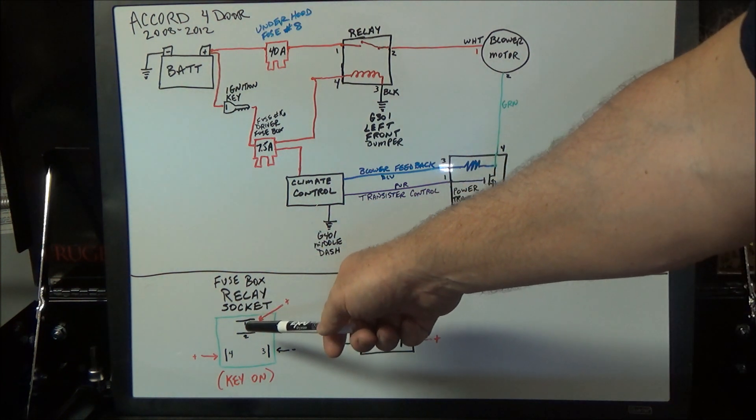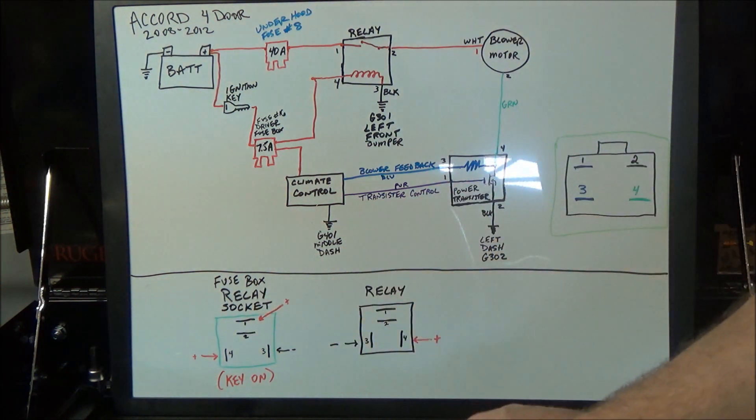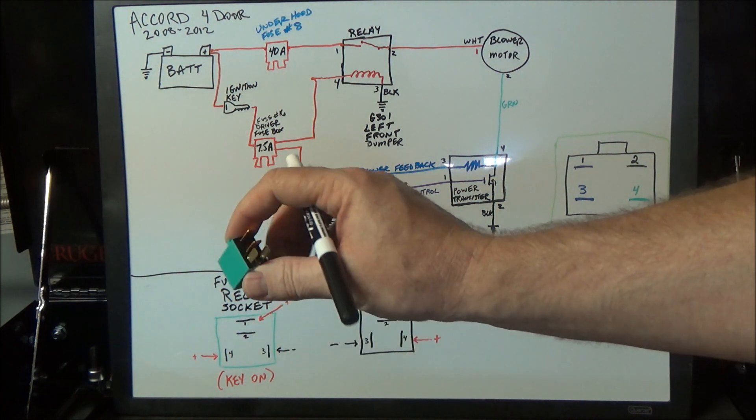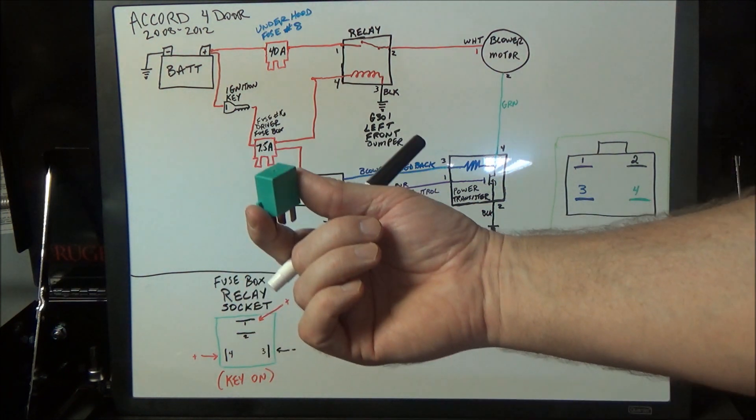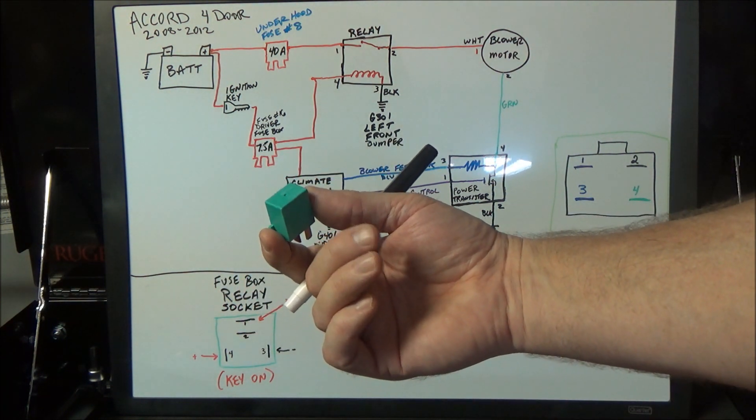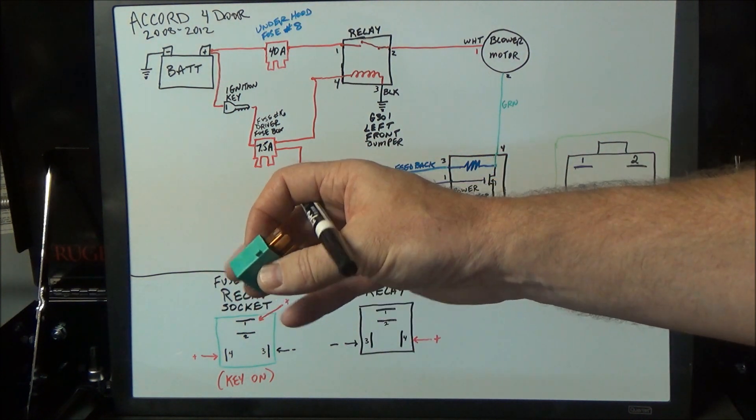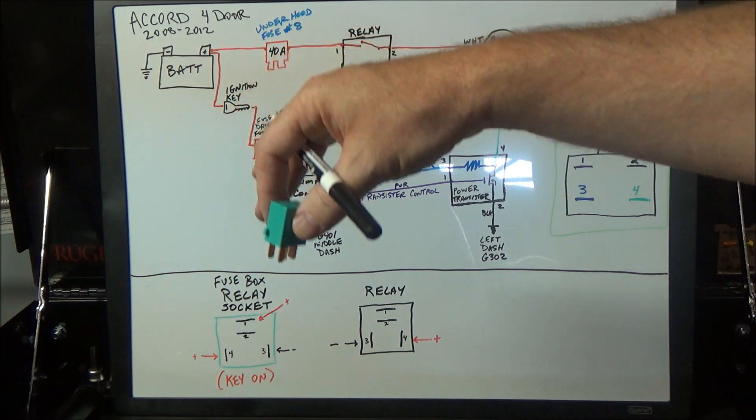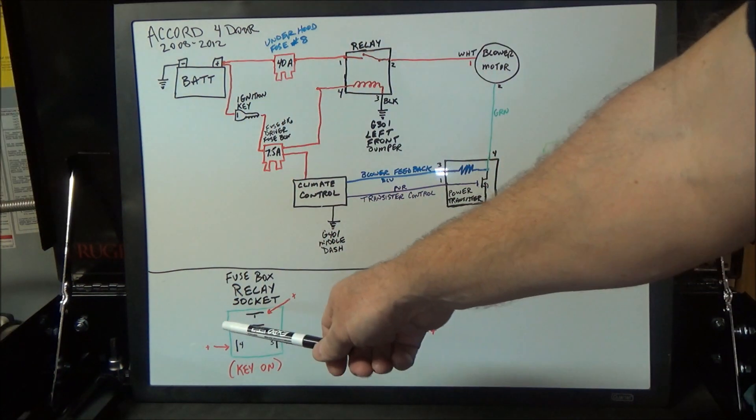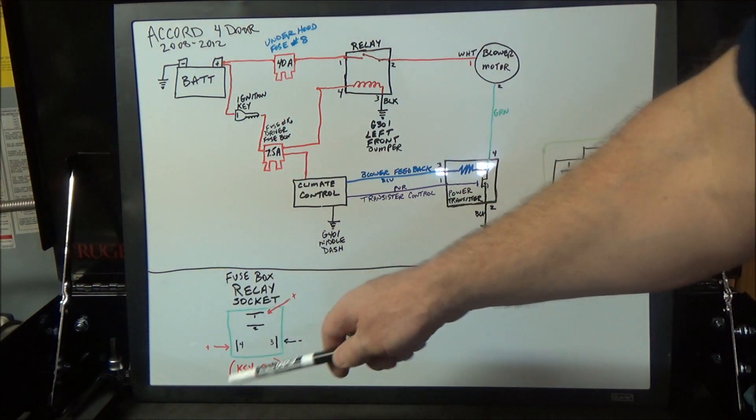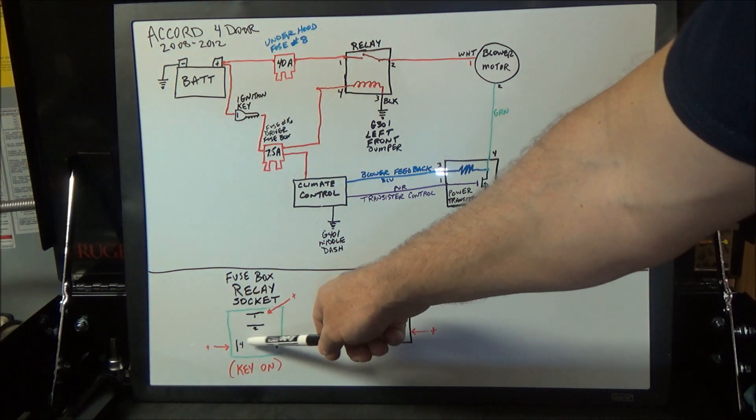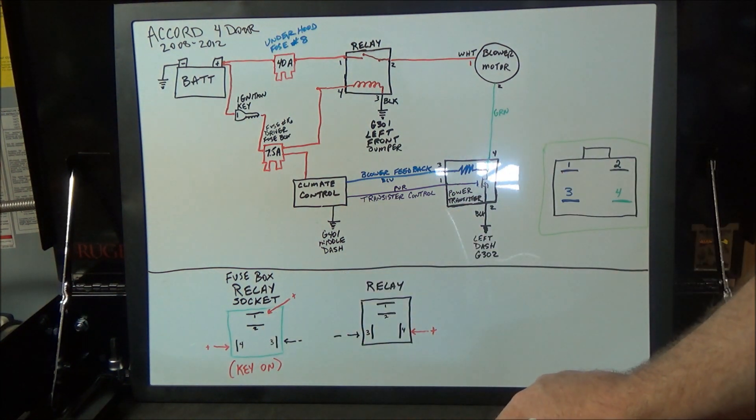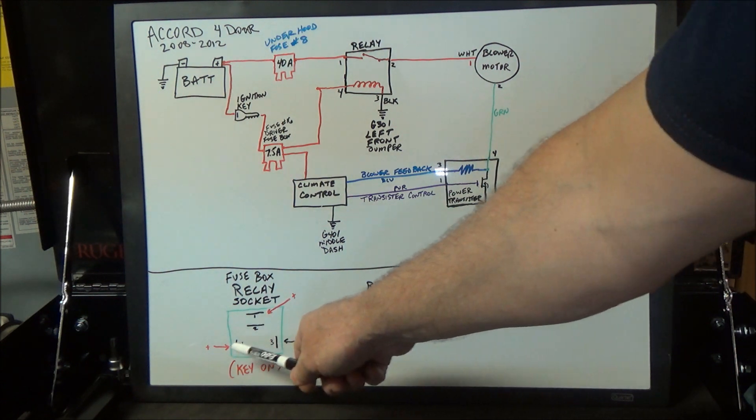On this vehicle, when you pop the relay out, you can just gently pry them out. Most usually you can do it with your fingers, but sometimes you need to use some kind of pliers or something to pop them out—just be gentle with it. When you pop it out, this is what you're looking at inside the fuse box.